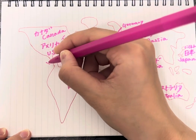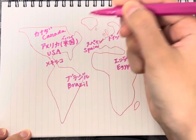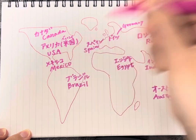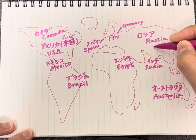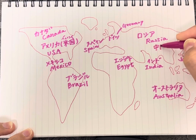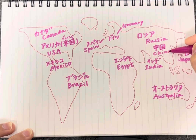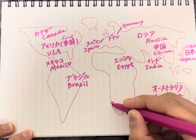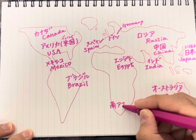Mexico is Mekishiko. China is 中国 (Chūgoku).